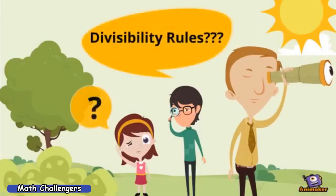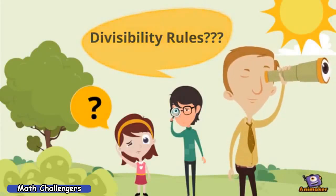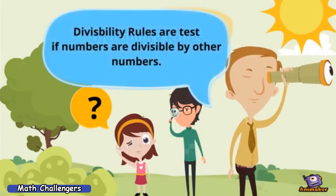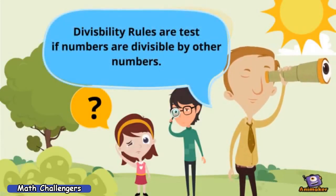Divisibility rules, or sometimes it is also called divisibility test. These are rules to determine if numbers are divisible by other numbers.